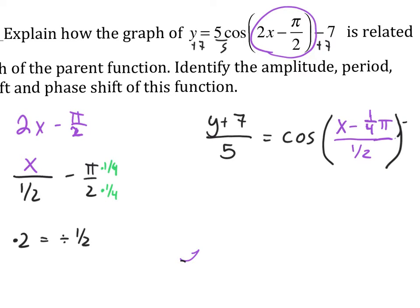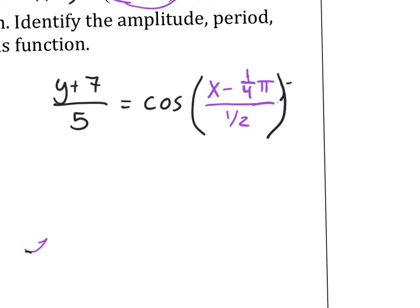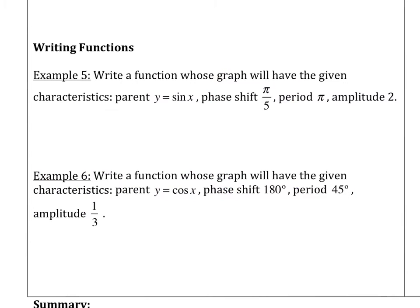Now we can interpret about how things change. We see that it is a vertical stretch by 5, a horizontal compression by 1/2, a vertical shift down 7, and right 1/4π. My amplitude is 5. My period is 2π times 1/2, which is π.